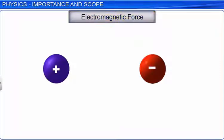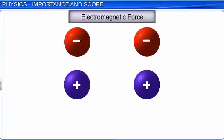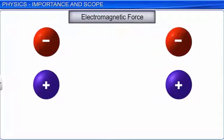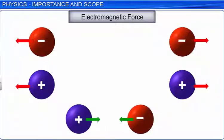Electromagnetic force is the force between two charged particles. Like charged particles repel each other and unlike charged particles attract. Like gravitational force, electromagnetic force is also universal and can act over very large distances.